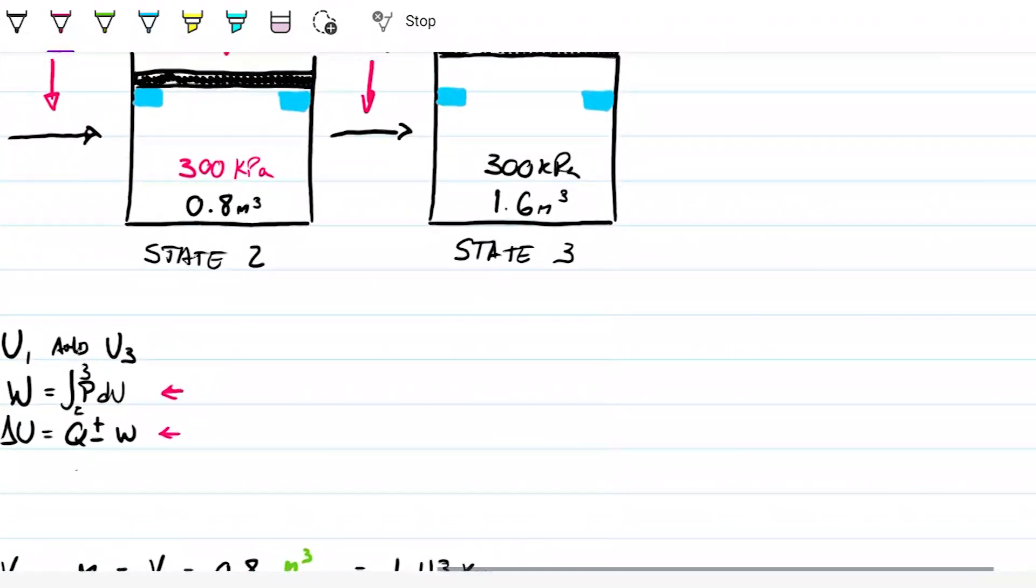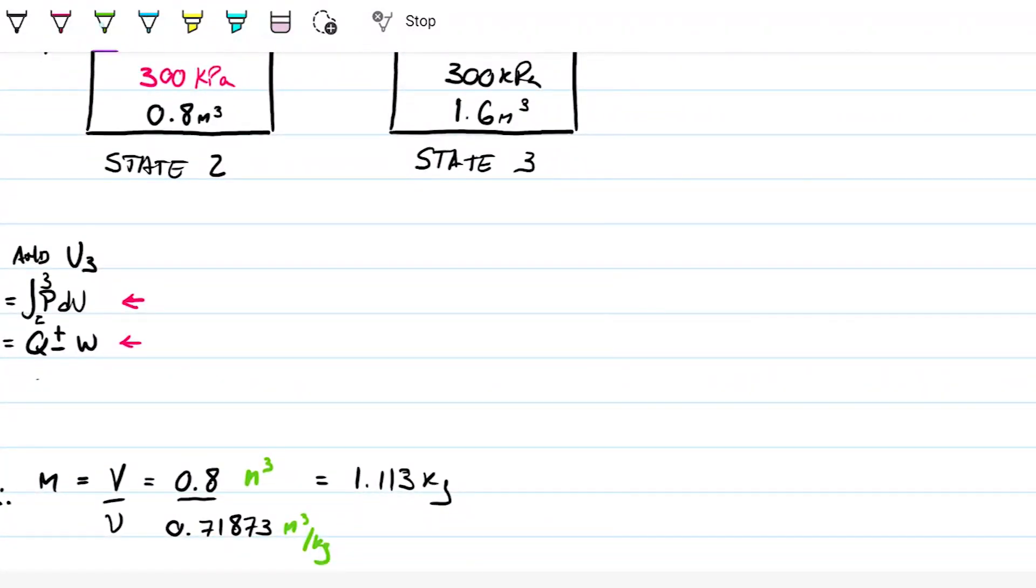So specific volume. We have volume divided by the mass. In this case here, the volume is 1.6 and the mass is 1.73. This is meters cubed. So obviously the volume level and the mass doesn't change, then specific volume has to double too, which means this is just double the 0.71 that we found before. That's going to be 1.44 meters cubed per kilogram.